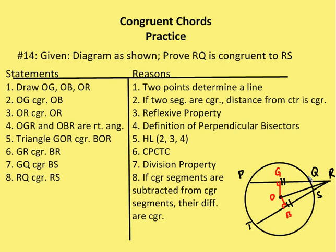Then GQ is congruent to BS by the division property — I have two congruent chords PQ and TS, with OG and OB as the perpendicular bisectors, so divisions of like segments are congruent. Now I subtract GQ and BS from GR and BR respectively, and I end up with RQ and RS as being congruent, because if congruent segments are subtracted from congruent segments, their differences are congruent.